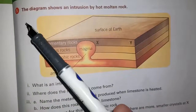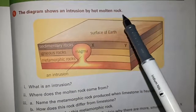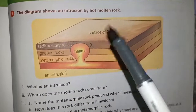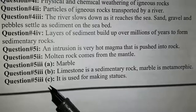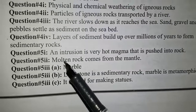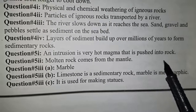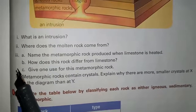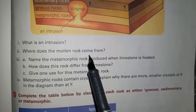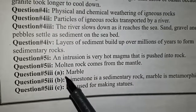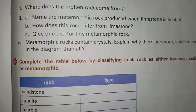Question number 5: the diagram shows an intrusion by hot molten rock. Part 1: what is an intrusion? An intrusion is very hot magma that is pushed into rock. Part 2: where does the molten rock come from? Molten rock comes from the mantle of the earth.